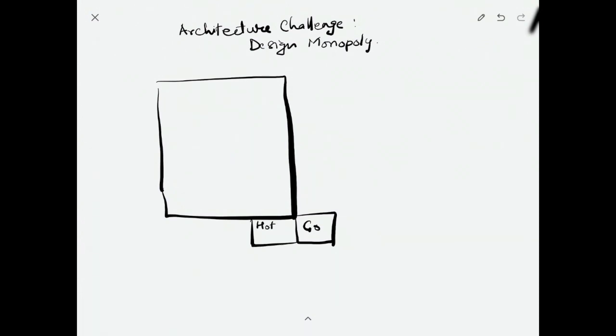The starting block is generally the Go. Another block could be a hotel owned by somebody else, so you may have to pay rent. Another block could be where you lose a turn.